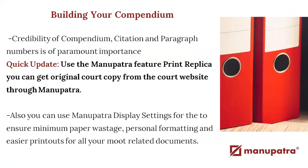Lastly, building your compendium. With compendiums, judges always have credibility issues — if you've cited a judgment, you could remove a word or add two words and include it as a typo error. Similarly, you can check your opposition's compendium the same way. How do you ensure your compendium is completely credible? Use the Manupatra feature of Print Replica. You can get the original court copy from the court website through Manupatra. Also, when using articles or other authorities that don't require the strict format of a judgment, you can use the display settings to save paper, format it as needed, and highlight or bold parts you need to show the judge.